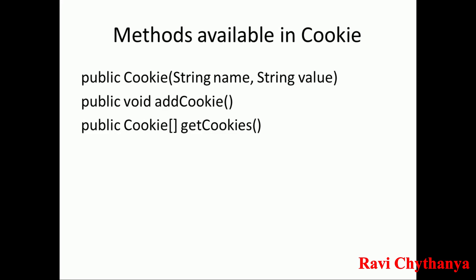We are going to look at an example with an HTML page that sends a name and value for a cookie. In the first JSP page we will retrieve those values, create a cookie using the constructor, add the cookie to the response, and then forward to the next JSP page.